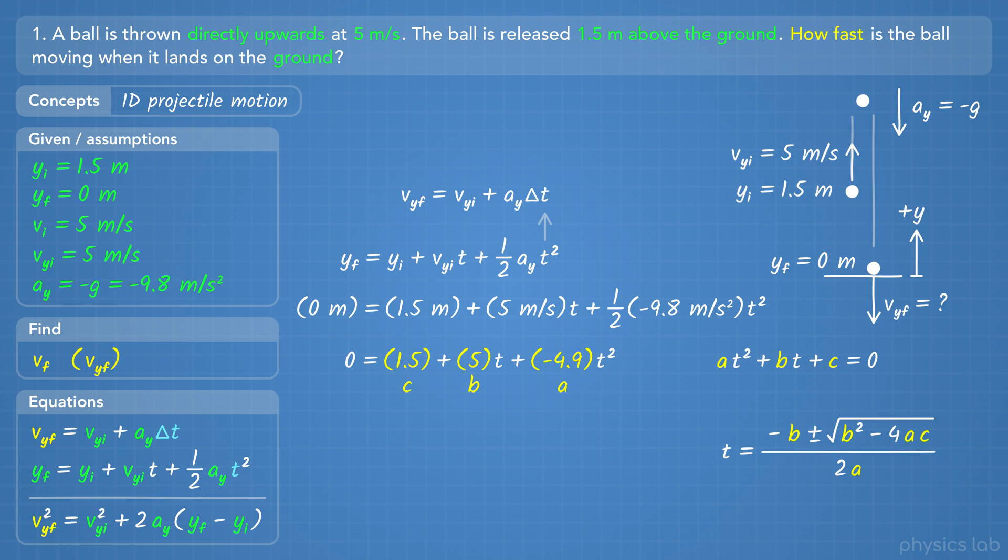The terms have to be added together, which is why a is negative 4.9. Then we can plug a, b, and c into the quadratic formula. When we calculate that using the plus sign and the minus sign, we get two values for t, negative 0.24 seconds, and positive 1.26 seconds. We covered this in the lesson videos, but we're going to ignore negative time values, so the time when the ball hits the ground is positive 1.26 seconds.